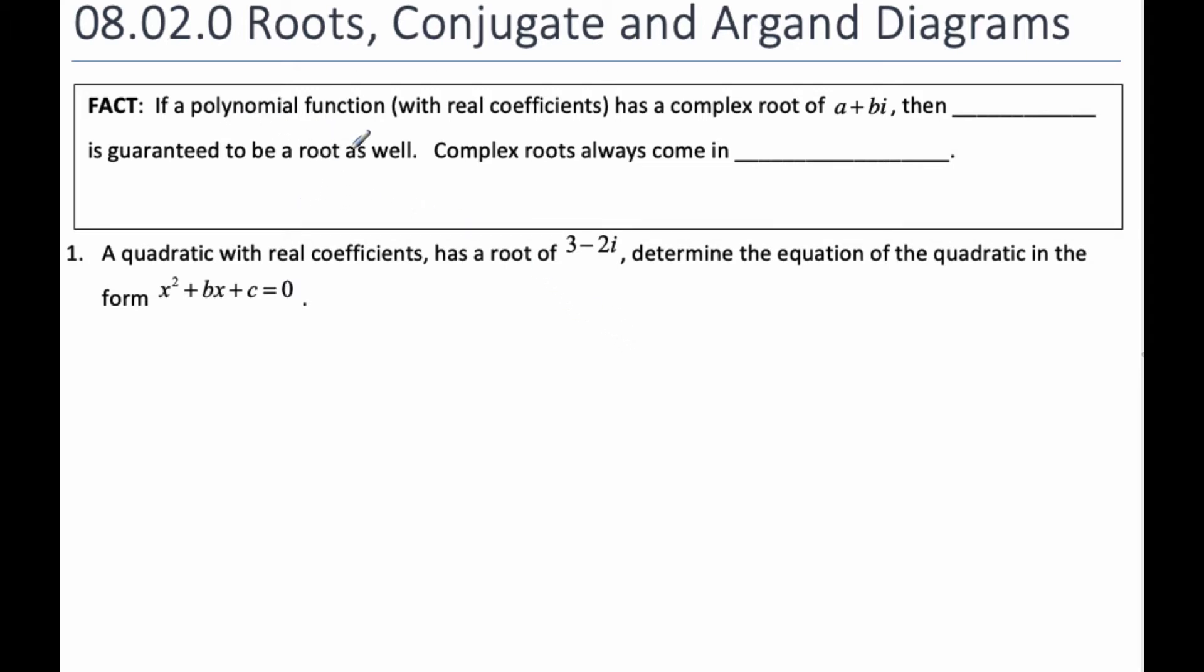If I have a polynomial function with real coefficients, and there's a complex root of a plus bi, then I know, guarantee, that a minus bi is a root as well. Because complex roots always come in pairs. And these are called conjugates of each other, because one is plus, and the other is minus of the imaginary part of the number.